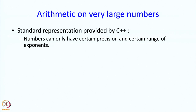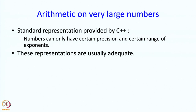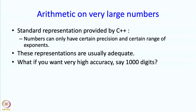But what if you want to represent a very high number of digits? These representations that C++ provides are usually very adequate, but sometimes you may want to represent numbers to very high precision. For example, you might have seen the value of pi calculated to a thousand places. How do they do that? That is the topic we want to talk about right now.